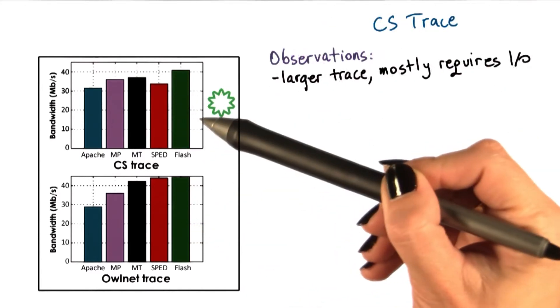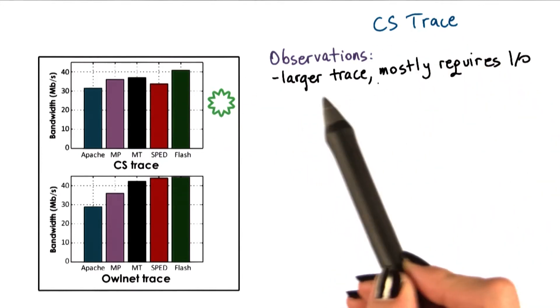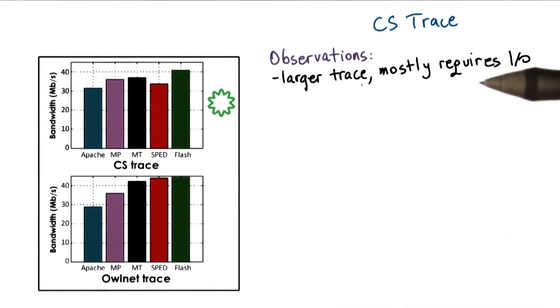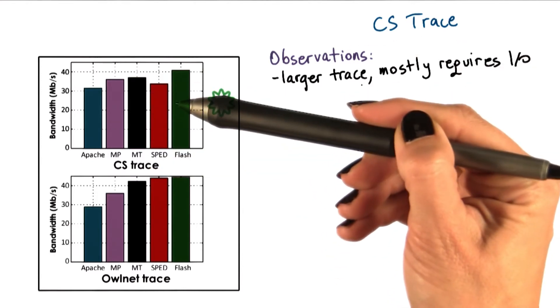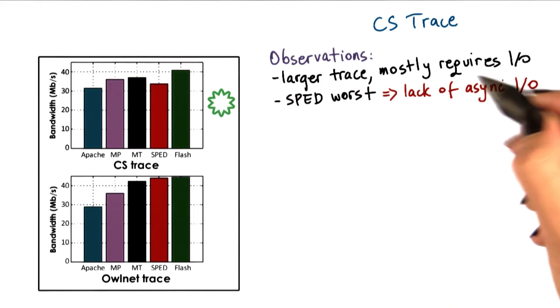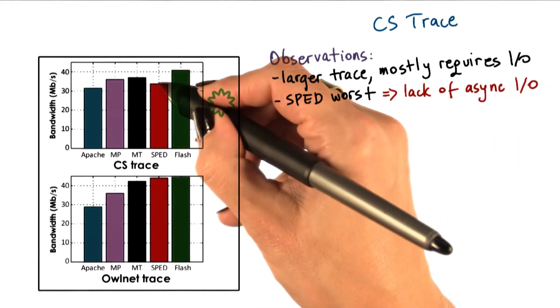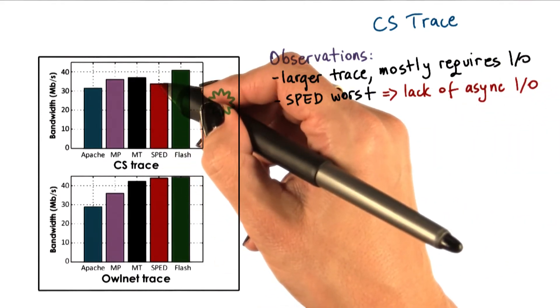Now, if we take a look at what's happening with the CS trace, this, remember, is a larger trace. So it will mostly require IO. It's not going to fit in the cache in memory in the system. Since the system does not support asynchronous IO operations, the performance of sped will drop significantly.